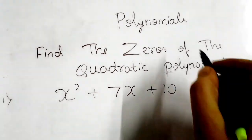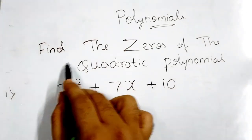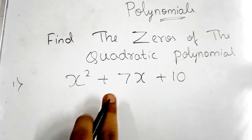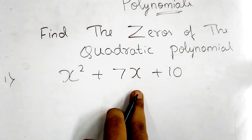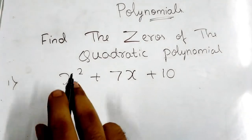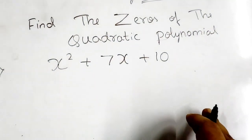Hi students, in the chapter on polynomials you will get questions like: find the zeros of the quadratic polynomial x² + 7x + 10. You have to find the zeros of this equation by splitting the middle term. We cannot use the formula method here.